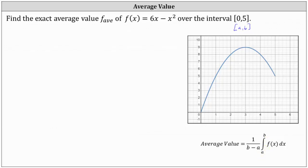Which means in our case the average value of the given function over the closed interval from 0 to 5, which we'll call f sub average, is equal to 1 divided by the quantity 5 minus 0 times the integral from 0 to 5 of f of x, which is 6x minus x squared dx.